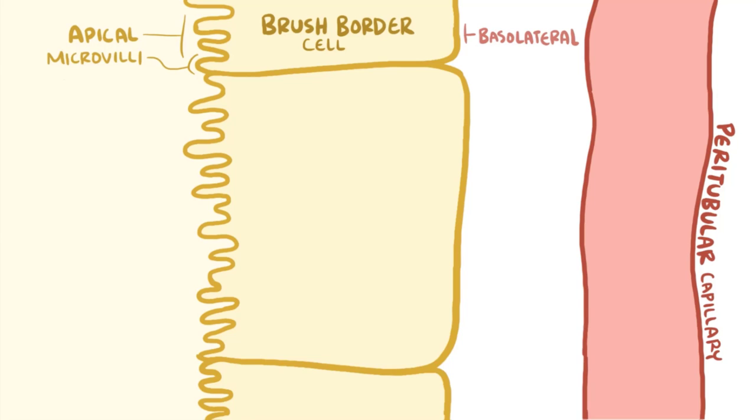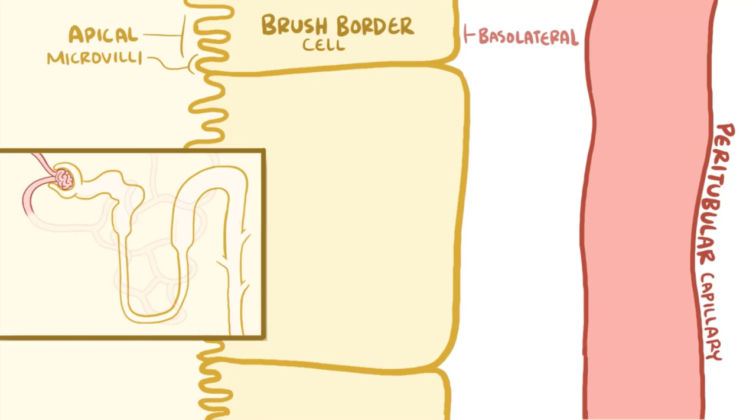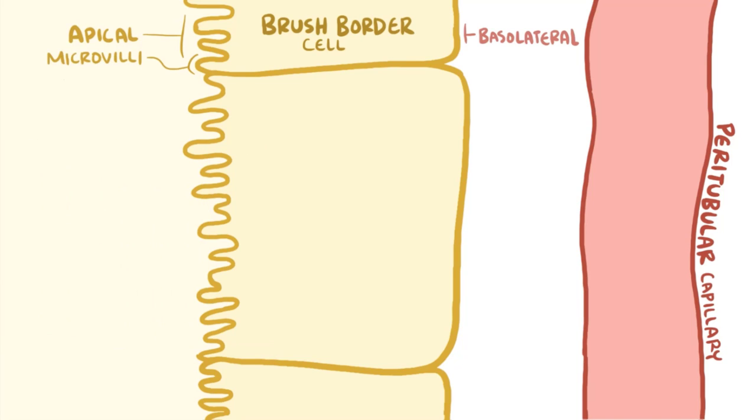With bicarbonate reabsorption, as the filtrate leaves the glomerulus, it first goes through the proximal convoluted tubule. At first this filtrate has the same concentration of electrolytes as the plasma it came from. But when a molecule of bicarbonate approaches the apical surface of the brush border cell, it binds to hydrogen that was secreted by the brush border cell in exchange for a sodium ion, and this forms carbonic acid.